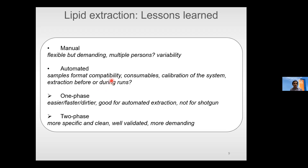Comparing one-phase versus two-phase extraction: one-phase is probably easier and faster but much dirtier. It is good for automated extraction because it simplifies robotic handling, but not good for shotgun analysis due to excessive ion suppression. Two-phase extraction is definitely more specific and clean, and much better validated for lipids, but more demanding — especially manually, because you must pay attention to which phase you are taking out. With a robotic system it is easier, but you must enable it to recognize which phase to collect.